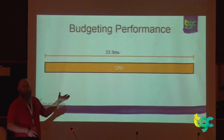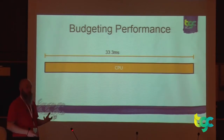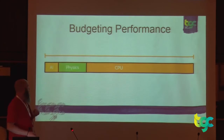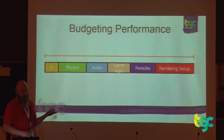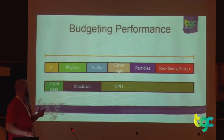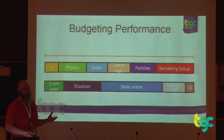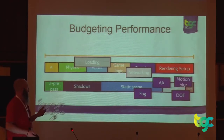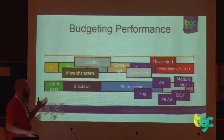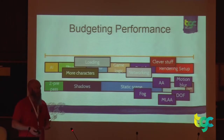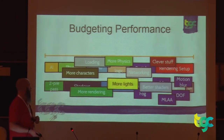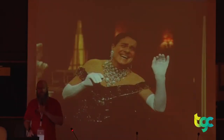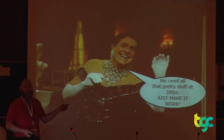Budgeting performance: you have a frame — 33 milliseconds. You start to fill it up with AI, physics, rendering setup, audio, game logic, particles. The GPU is doing Z prepass, shadows, static scene, transparents, UI. Then you need loading, networking, fog, depth of field, anti-aliasing, motion blur, more characters, more physics, more rendering, more lights, better shaders. And you still have to fit all of this in there.